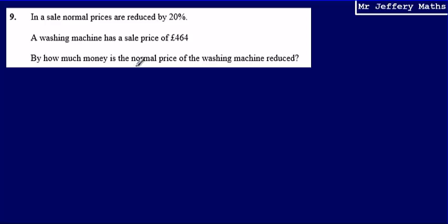So the first thing to consider is what was the normal price of the washing machine? To think about this, I can think about the washing machine. This is an amount that I don't know and what has happened to this amount that I don't know? The normal price has been reduced by 20%. It's had 20% taken off of it and when 20% is taken off of that amount that I don't know, that has given me £464.